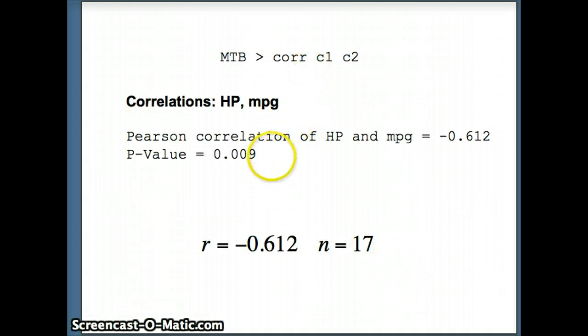Now how does that correspond to the p-value that Minitab gave us? When we did CORR C1, C2, Minitab gave us a p-value of 0.009. Notice that it's twice 0.0045, and that is, in general, what's going to happen.